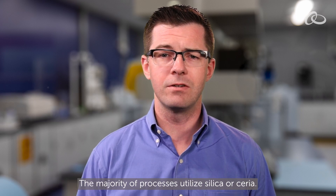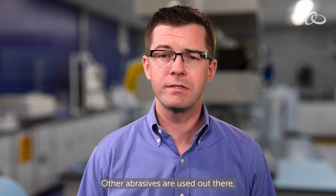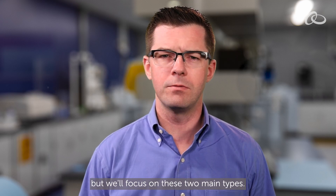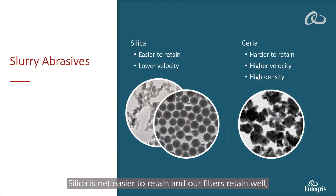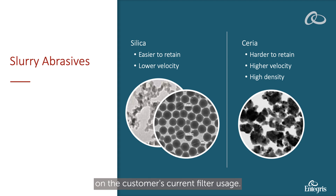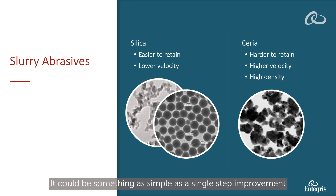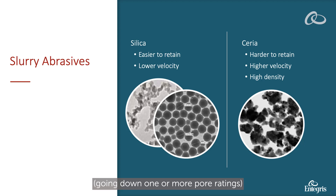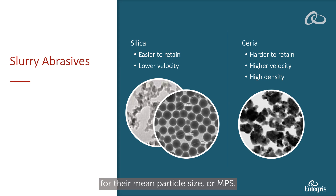The majority of processes utilize silica or ceria. Other abrasives are used out there, but we'll focus on these two main types. Silica is easier to retain, and our filters retain it well, so the level of improvement depends on the customer's current filter usage. It could be something as simple as a single step improvement, going down one or more pore ratings, or ensuring the customer is utilizing the correct filter for their mean particle size, or MPS.